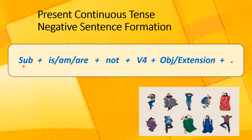The subject comes at the start of the sentence. Then comes the helping verb — is, am, or are. Then you add not, because this is the negative sentence. Then comes the doing word, or the fourth form of the verb. Then you add the object or extension along with the full stop.